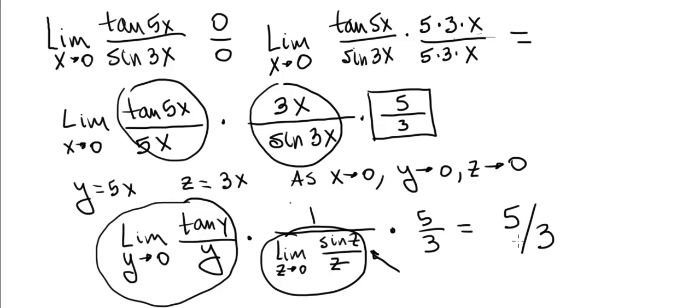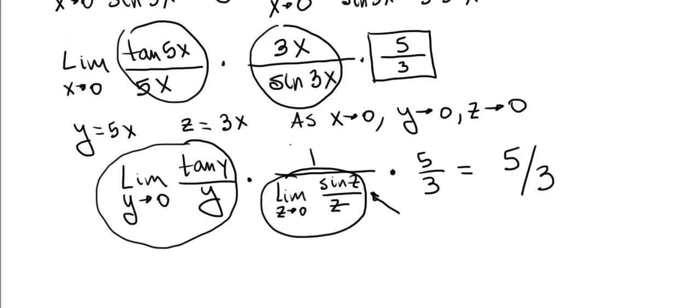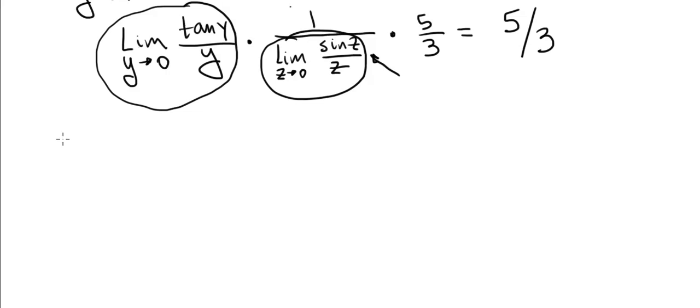So in the future, any time you encounter limits like this, let's say limit x goes to 0 and then we have something like tangent of ax divided by sine of bx. Assuming that a and b are positive numbers, this limit would be by the same argument I just gave you a divided by b.